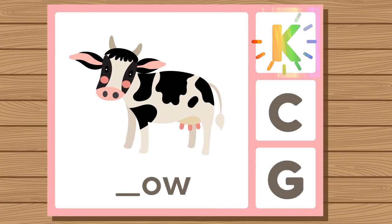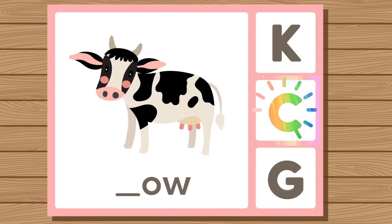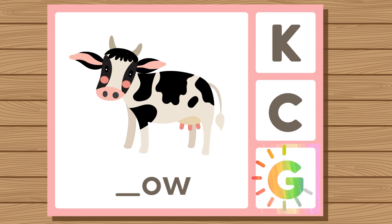Does cow start with K, C, or G? Cow. Cow starts with C.